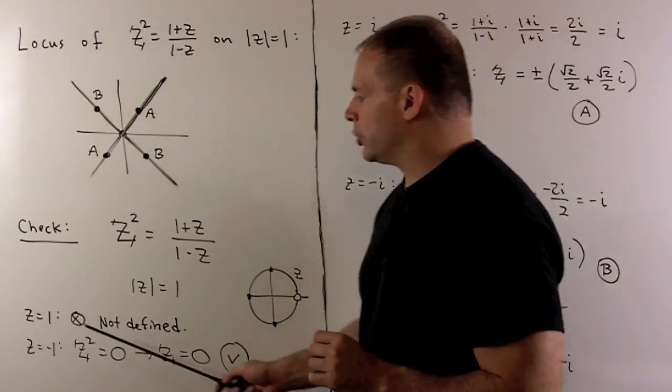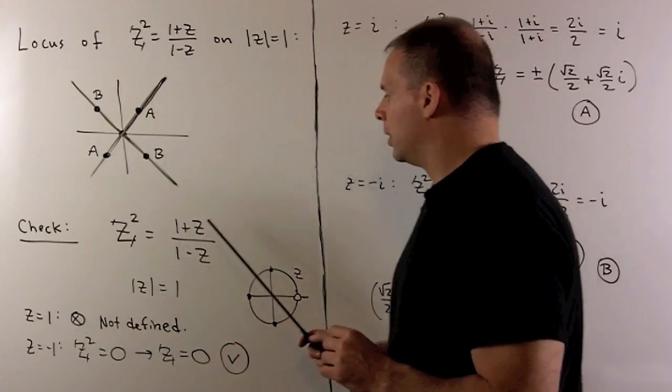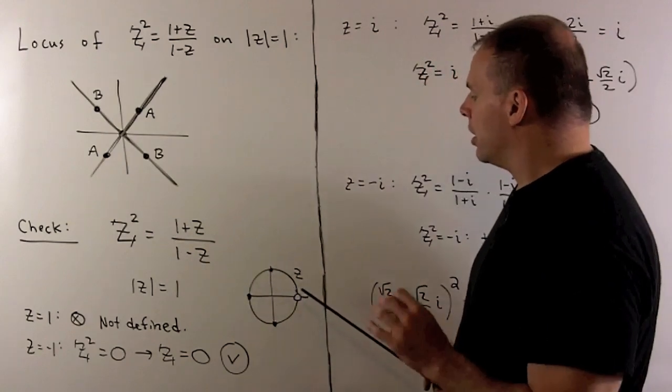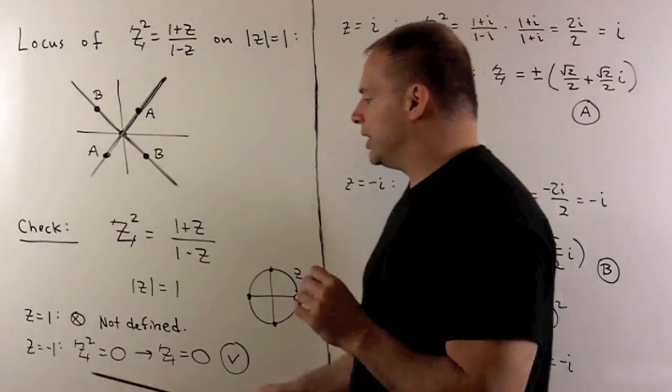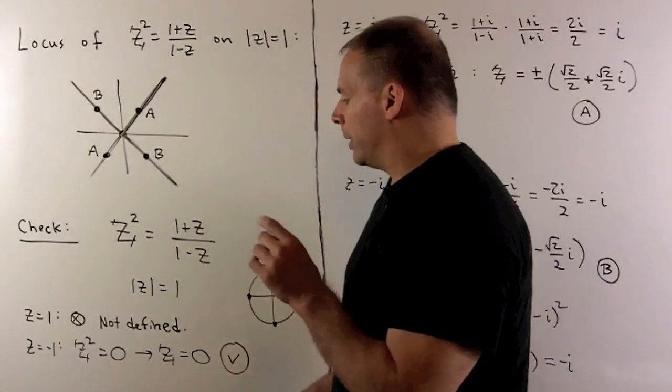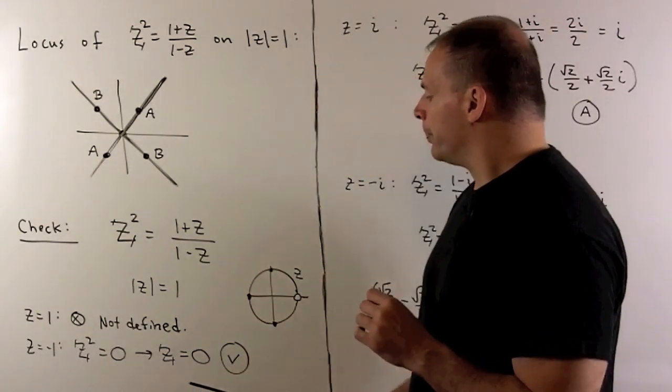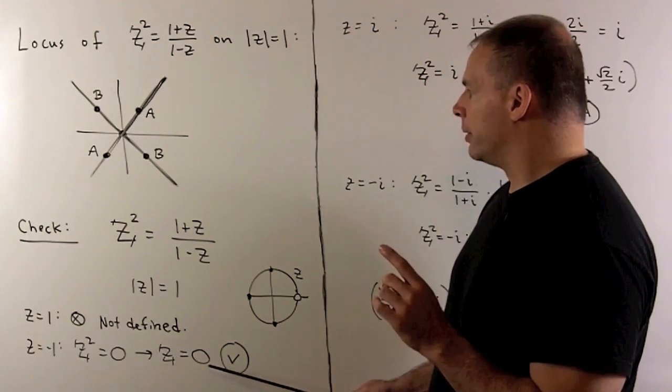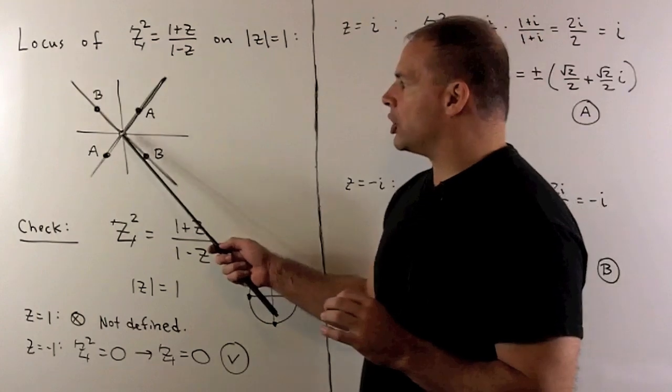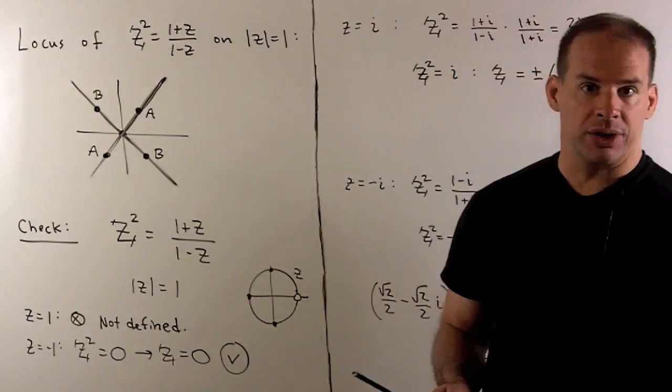If we try z equal to 1, the right-hand side is undefined, so that won't contribute anything to the locus. If I use z equal to minus 1, we have big Z squared equal to 0, and that means the unique square root is z equals 0. That gives us the origin on our locus.